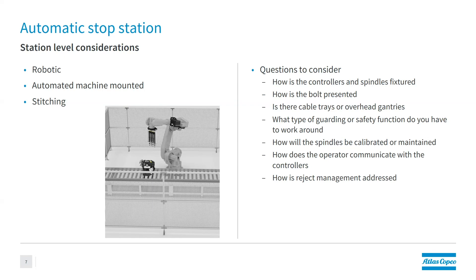When talking about multiple spindles, we want to think about how they'll be calibrated or maintained — we want to make sure we're providing the right equipment while also making it easy to maintain and calibrate in the future. How does the operator communicate with the controller? Is there a computer outside the cell, or is it all web-based via Wi-Fi or Bluetooth? And again, how is reject management being addressed?